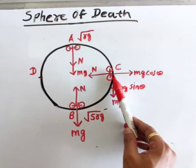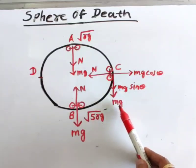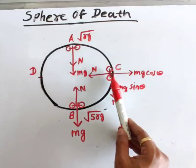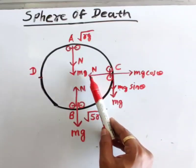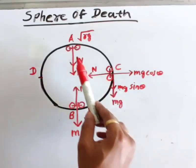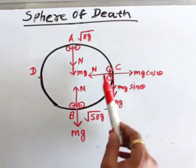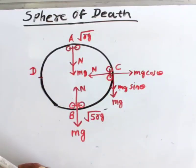At point C, the mid position, the weight of the vehicle acts vertically downward as mg, and the normal reaction is directed towards the center of the sphere. At all three positions — lowest, topmost, and mid — the normal reaction is always directed towards the center.